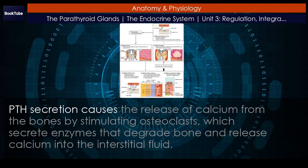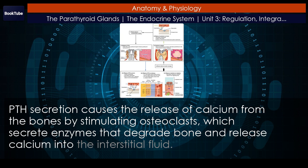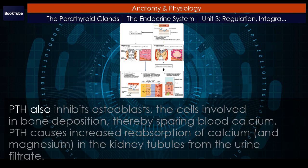PTH secretion causes the release of calcium from the bones by stimulating osteoclasts, which secrete enzymes that degrade bone and release calcium into the interstitial fluid. PTH also inhibits osteoblasts, the cells involved in bone deposition, thereby sparing blood calcium.